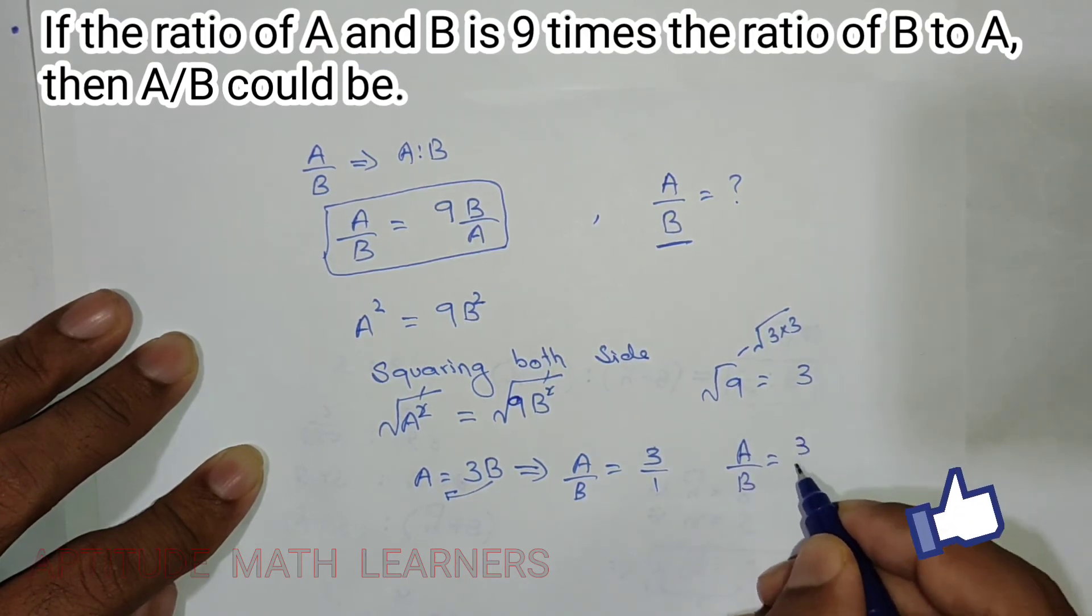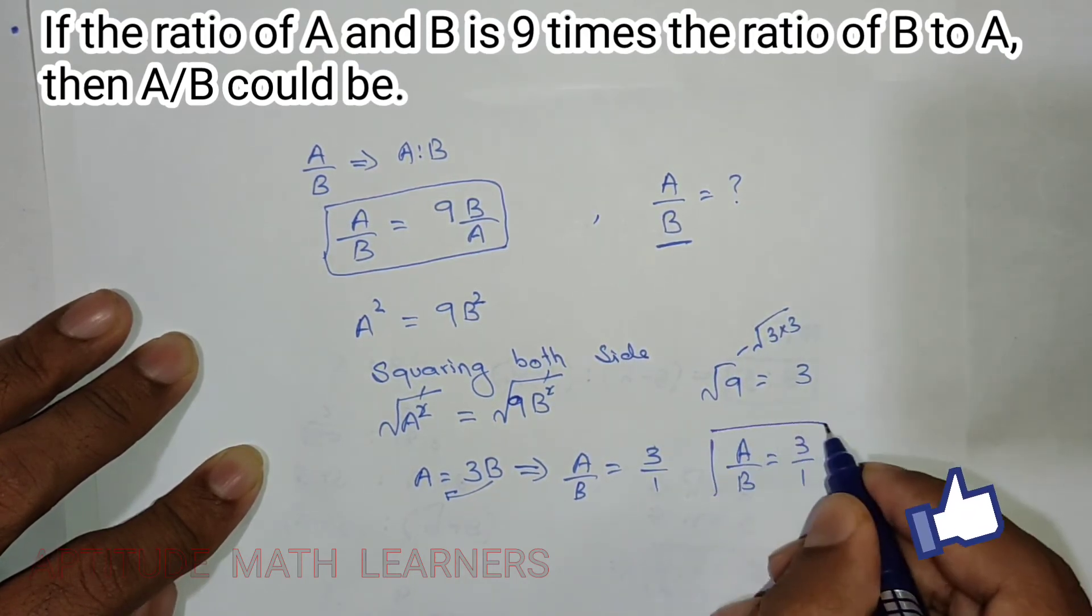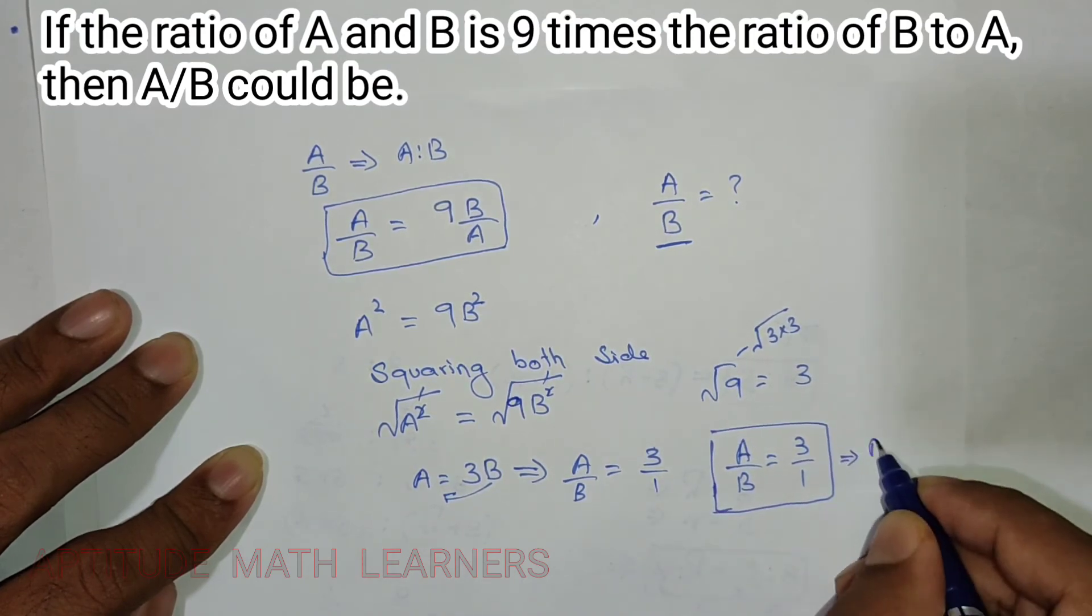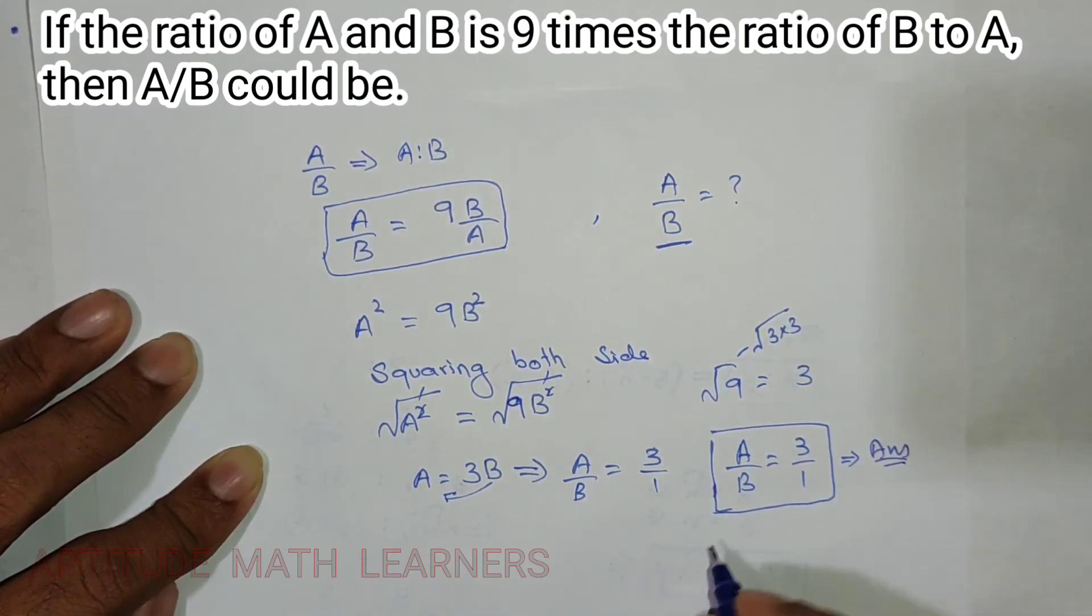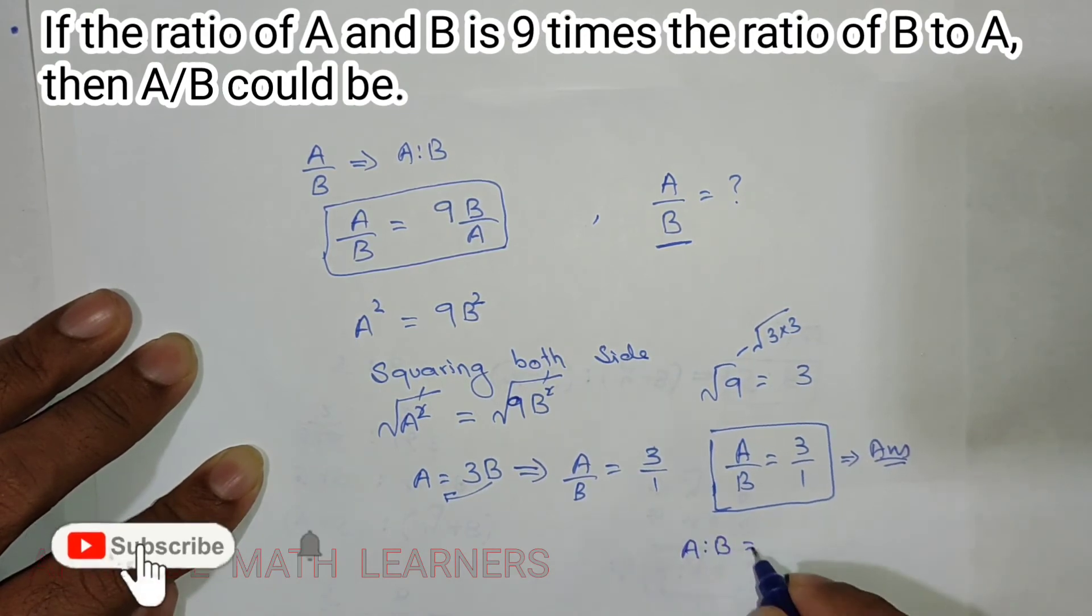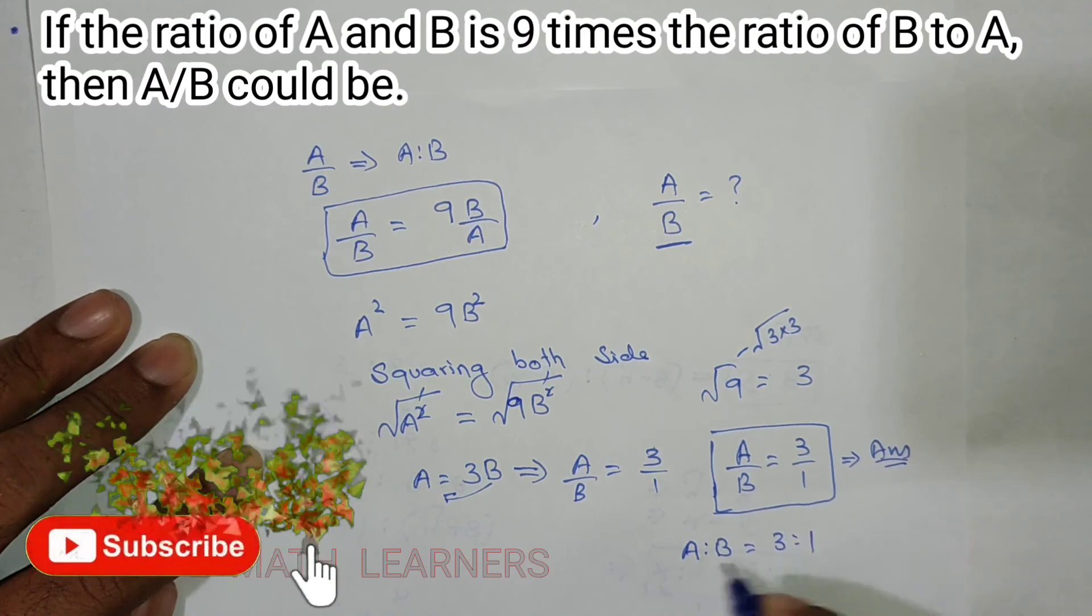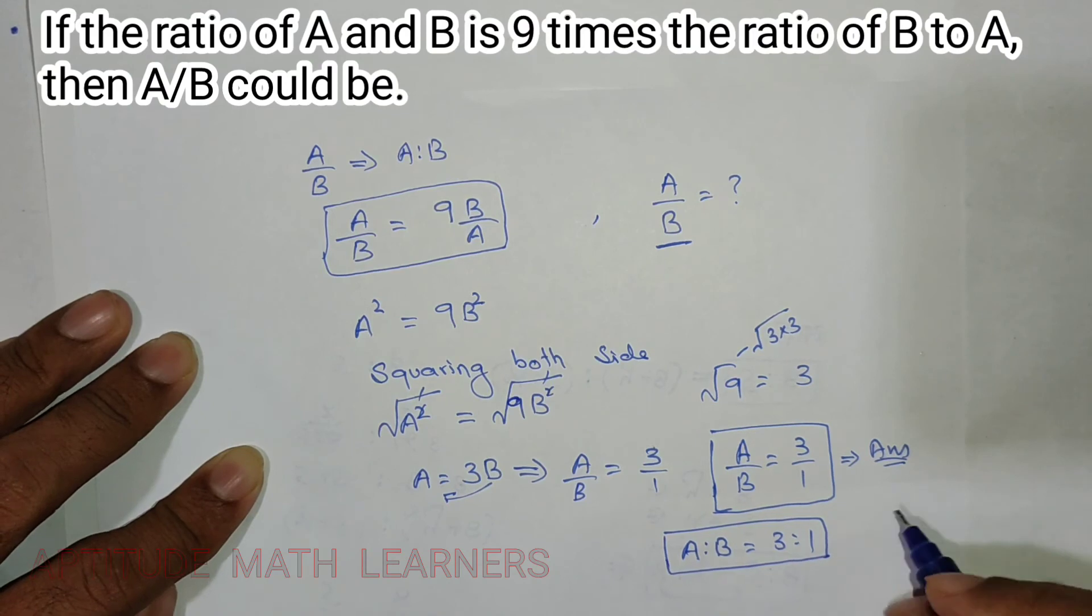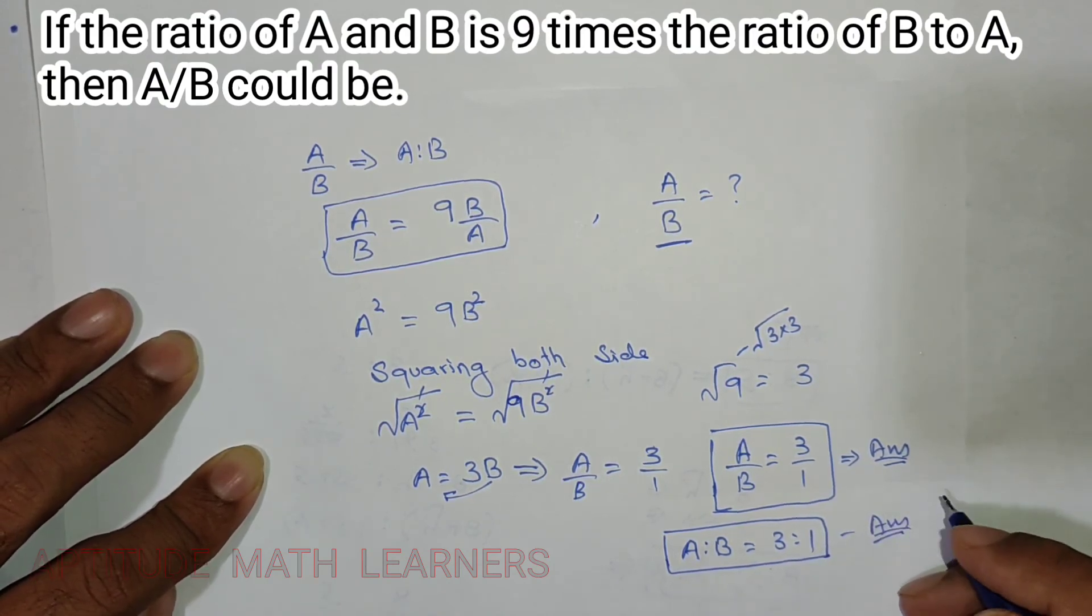This is our answer. It could also be written in the form of a ratio: A to B is equal to 3 to 1. This is the same form as above, so both are our answer.